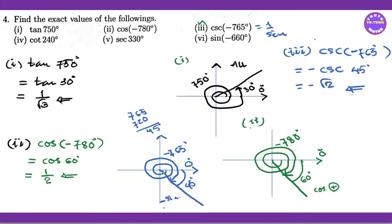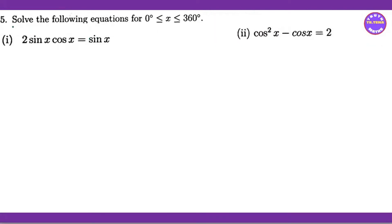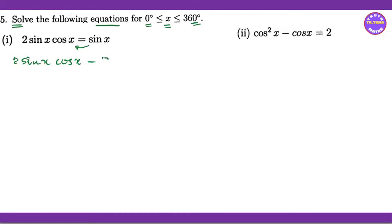Now I will try to get the question. Solve the following equation. The domain is x from 0 to 360 degrees. The equation given is: sin x cos x minus sin x equals 0.